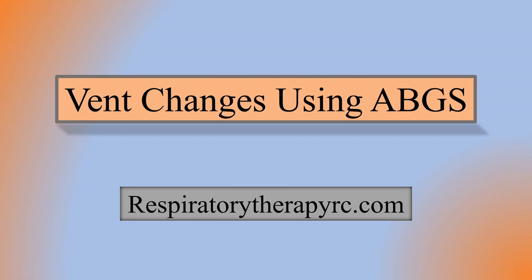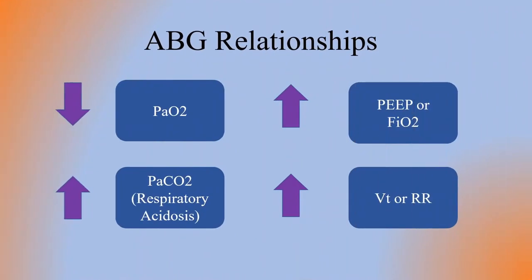Moving on to ABG relationships with the ventilator. If you have a low PaO2, you have two options: you can go up on the PEEP or the FiO2. Most of the time we go up to 60 or 70% FiO2 and then we start looking at increasing the PEEP. So those are your two options.